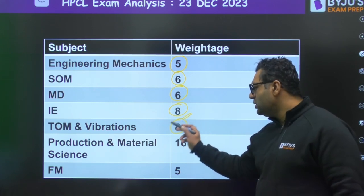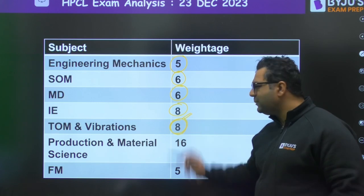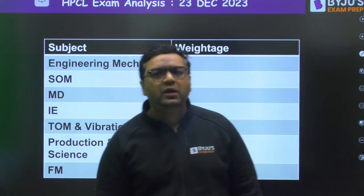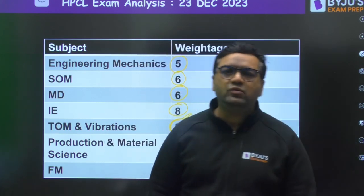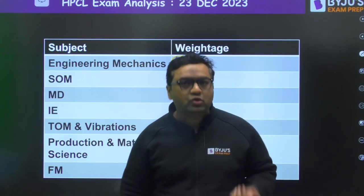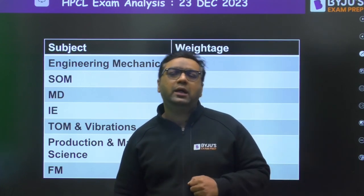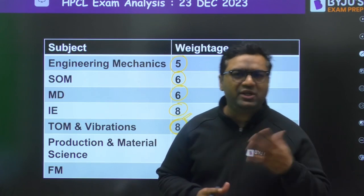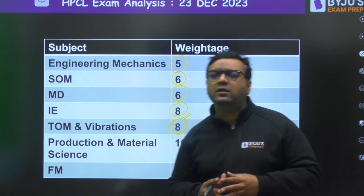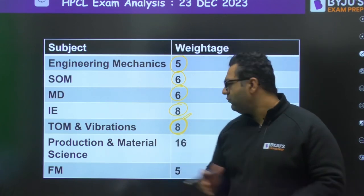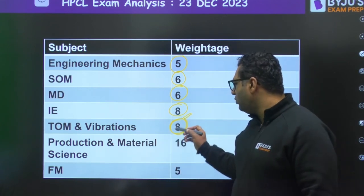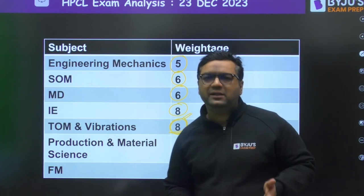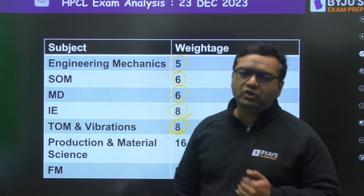For Theory of Machines and Vibration, around nine to ten questions were expected and eight questions were there. Questions were majorly from the Gears topic, with one to two questions from Vibrations as well. Given its bigger syllabus, this subject was expected to have a higher count.